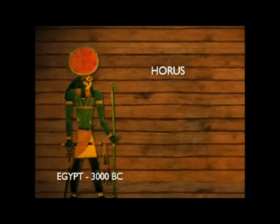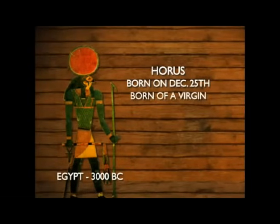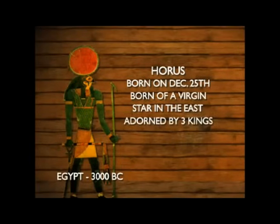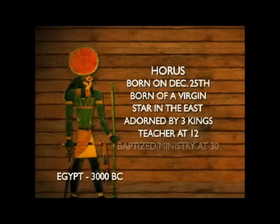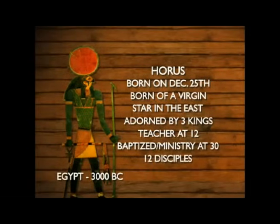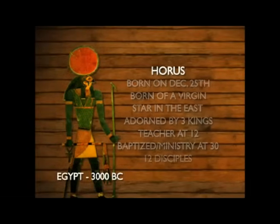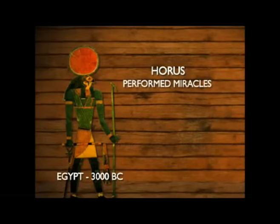Horus was born on December 25th of the Virgin Isis Mary. His birth was accompanied by a star in the east, which three kings followed to locate and adorn the newborn savior. At the age of twelve, he was a prodigal child teacher. At the age of thirty, he was baptized by a figure known as Anup, and thus began his ministry. Horus had twelve disciples he traveled about with, performing miracles such as healing the sick and walking on water.